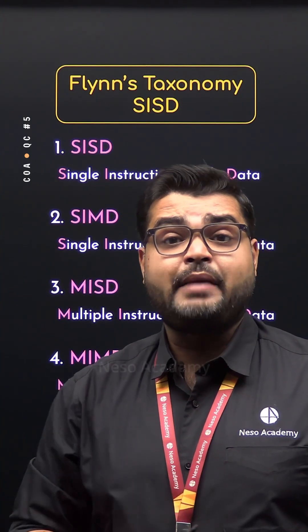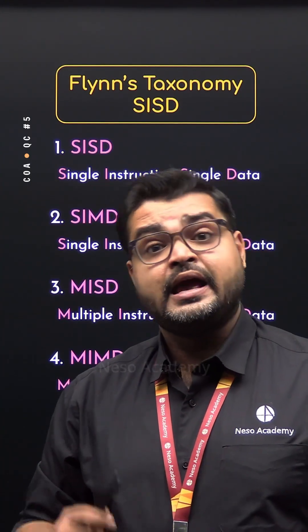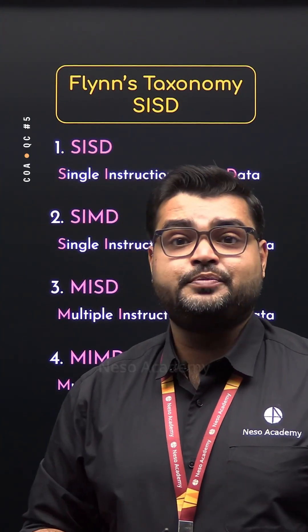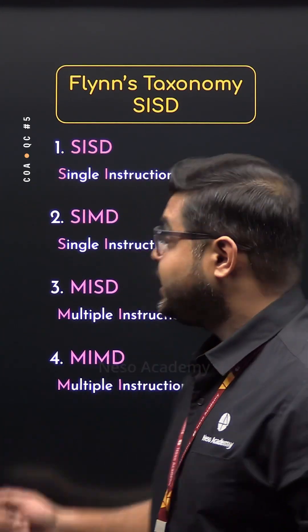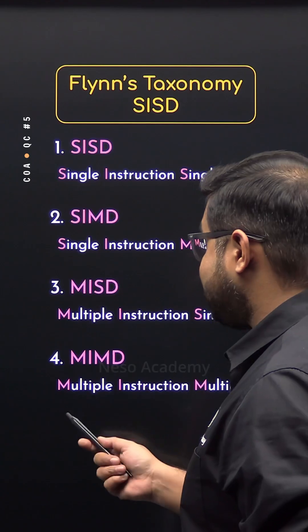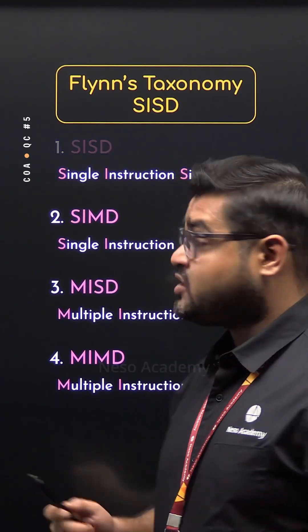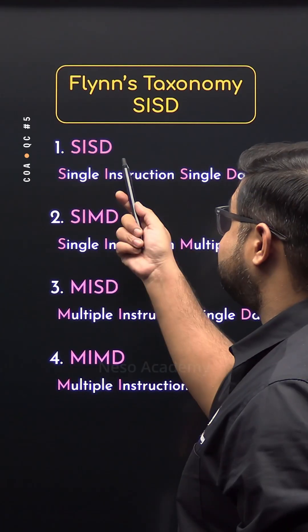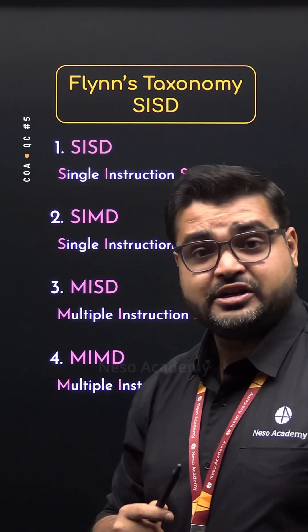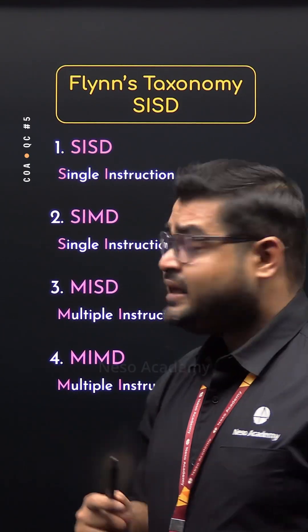In Flynn's taxonomy, Michael J. Flynn classified the computer architectures into four different categories. The first category is called SISD. Let's learn about that.